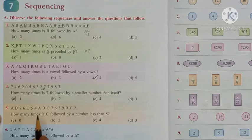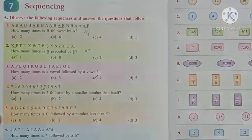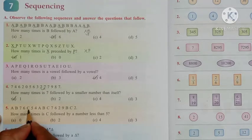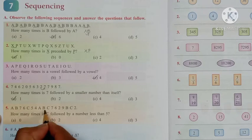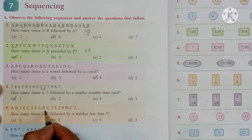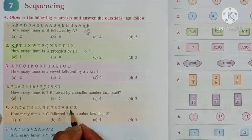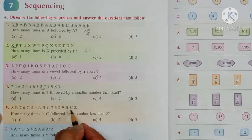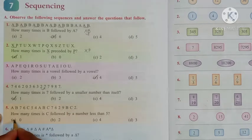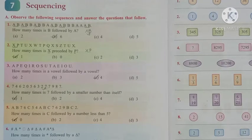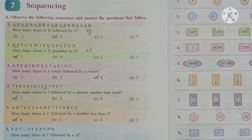Now how many times is C followed by a number less than 5. So C is here. Before C we have 6 which is greater than 5. C is here but before an alphabet. So that is not the required case. Next, yes, we cannot see any such combination. So mark 0. Hope you are following.